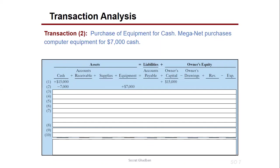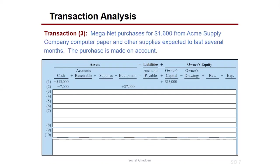You can pause the video and test your knowledge at any time. Transaction 3: MEGANET purchases $1,600 of computer paper and other supplies from ACME Supply Company, expected to last several months. The purchase is made on account — meaning supplies were received but not yet paid for. Supplies increase by $1,600, and accounts payable (a liability) also increases by $1,600, maintaining equality.